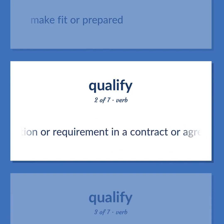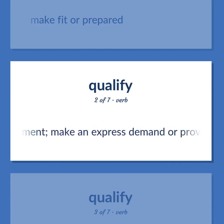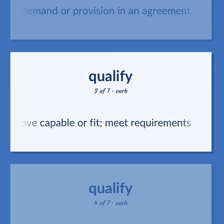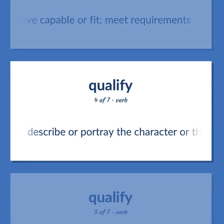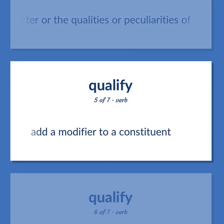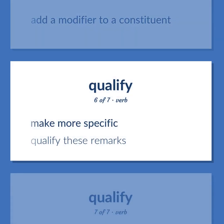Stipulate/Qualify: specify as a condition or requirement in a contract or agreement; make an express demand or provision in an agreement. Prove capable or fit; meet requirements. Describe or portray the character or the qualities or peculiarities of. Add a modifier to a constituent. Make more specific — 'Qualify these remarks.'